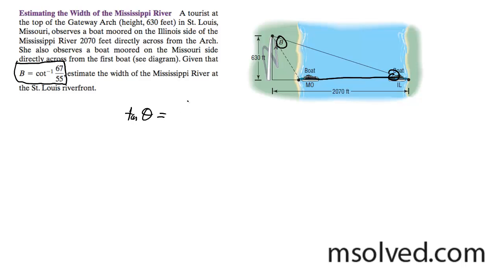Theta is equal to inverse tangent of 630 divided by 2070, and what I ended up getting is - give me a second - I got 16.9275 degrees.